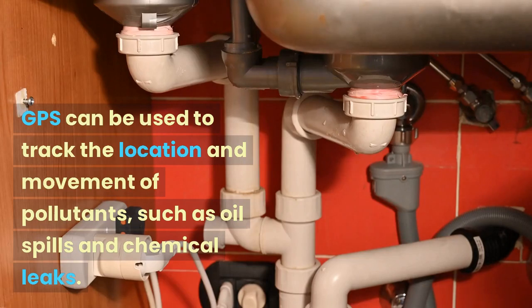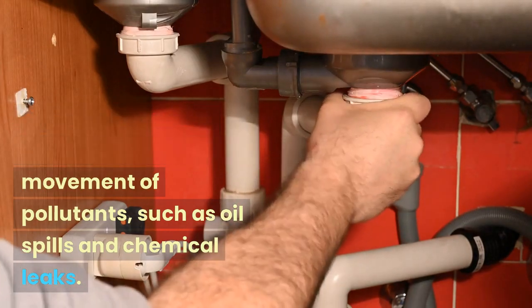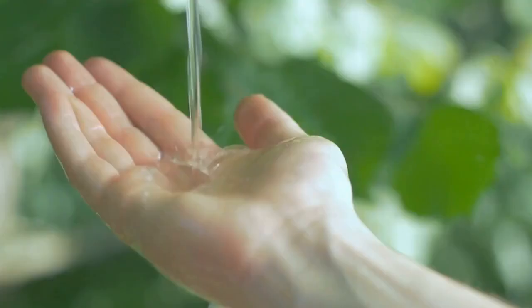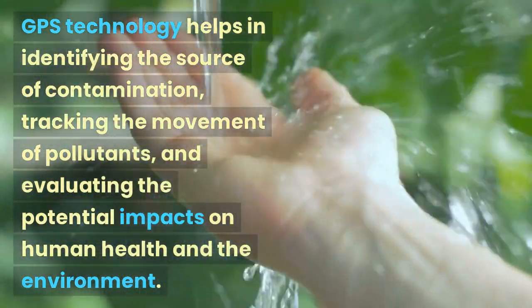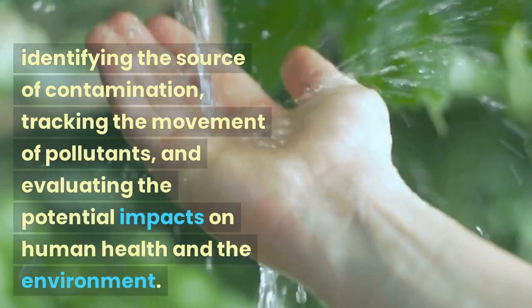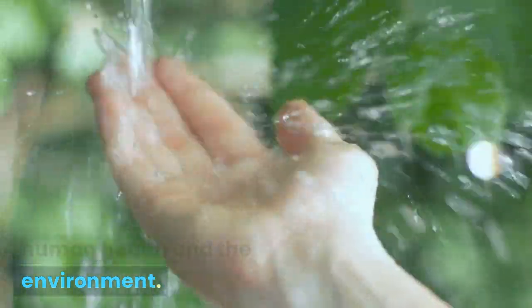Environmental Risk Assessment. GPS can be used to track the location and movement of pollutants, such as oil spills and chemical leaks. GPS technology helps in identifying the source of contamination, tracking the movement of pollutants, and evaluating the potential impacts on human health and the environment.